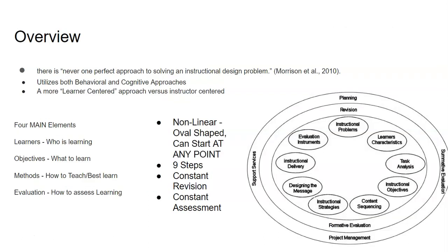Here's our overview. The biggest thing is that there's no one perfect approach to solving any kind of design problem with the Kemp model. It is a non-linear, oval-shaped model that can start at any point — there's no fixed starting point. There are nine elements that you work through, and you can work through them in any order you want. You can start anywhere and finish anywhere as you go through it.